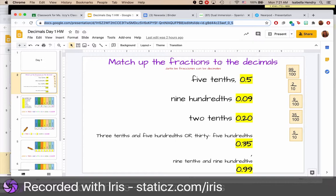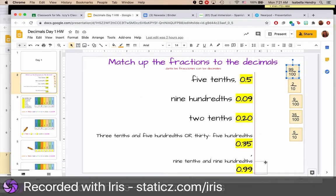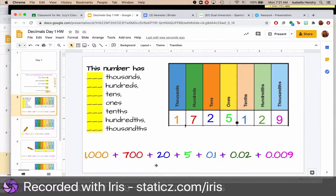On the first slide, we're matching the fractions to the decimals. So 99 hundredths matches with this one because this is nine-tenths and nine-hundredths, or we can say 99 hundredths.